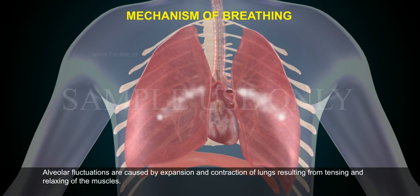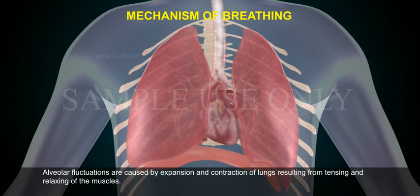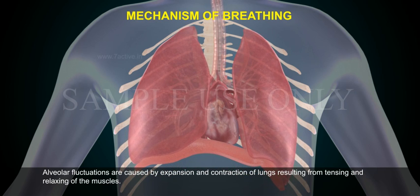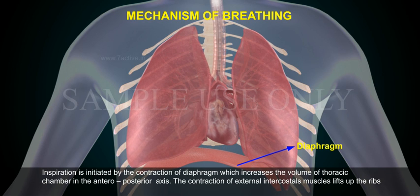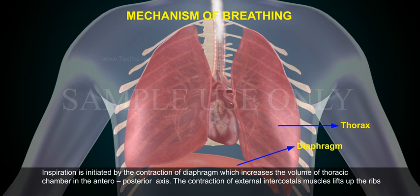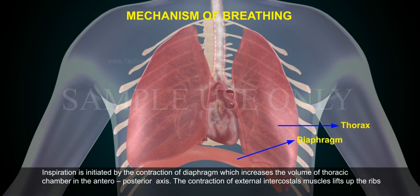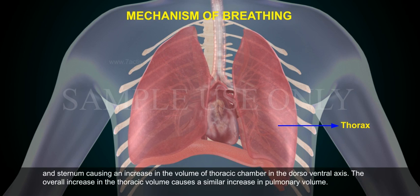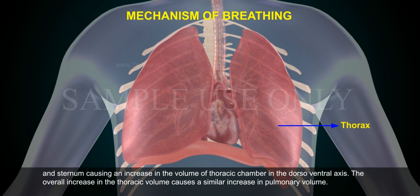Alveolar pressure fluctuations are caused by expansion and contraction of the lungs, resulting from tensing and relaxing of the muscles. Inspiration is initiated by the contraction of the diaphragm, which increases the volume of the thoracic chamber in the antero-posterior axis, and the contraction of external intercostal muscles lifts up the ribs and sternum, causing an increase in the volume of the thoracic chamber in the dorso-ventral axis. The overall increase in thoracic volume causes a similar increase in pulmonary volume.